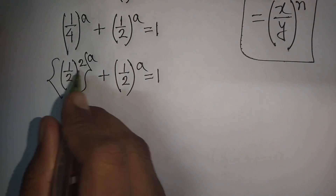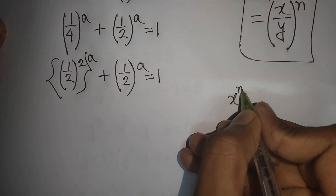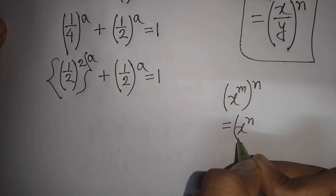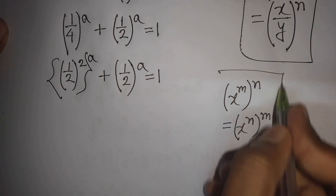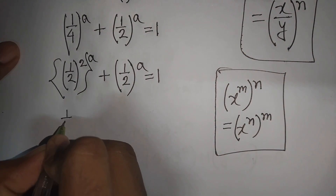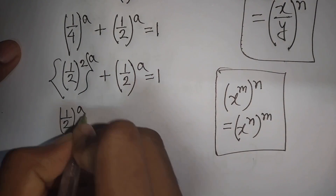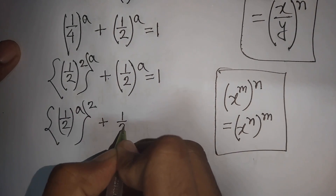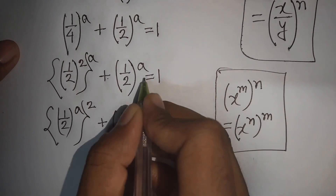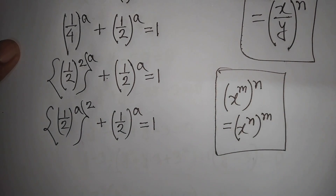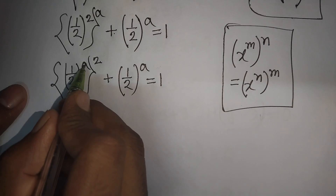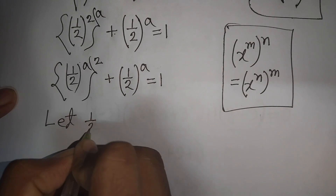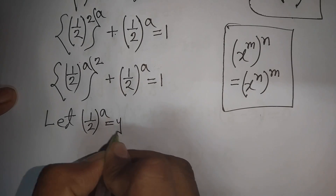Here we apply the rule that x to the power m, bracket raised to power a, equals x to the power m times a. So we can write (1/2) to the power a, then the second bracket raised to power 2, plus (1/2) to the power a, equals 1. We now see (1/2)^a appears in both terms.